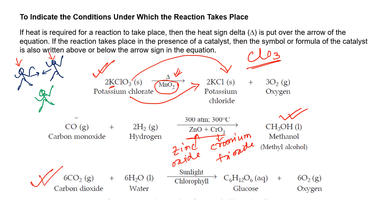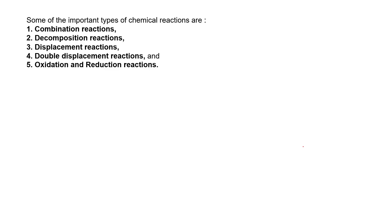The first reaction is a decomposition reaction. The third and most important reaction: carbon dioxide reacts with water in presence of sunlight and at the chlorophyll, and we get glucose and some oxygen. This is the photosynthesis reaction, occurring in the leaves of plants in the chlorophyll region. Now there are some types of chemical reactions: combination, decomposition, displacement, double displacement, and oxidation-reduction.